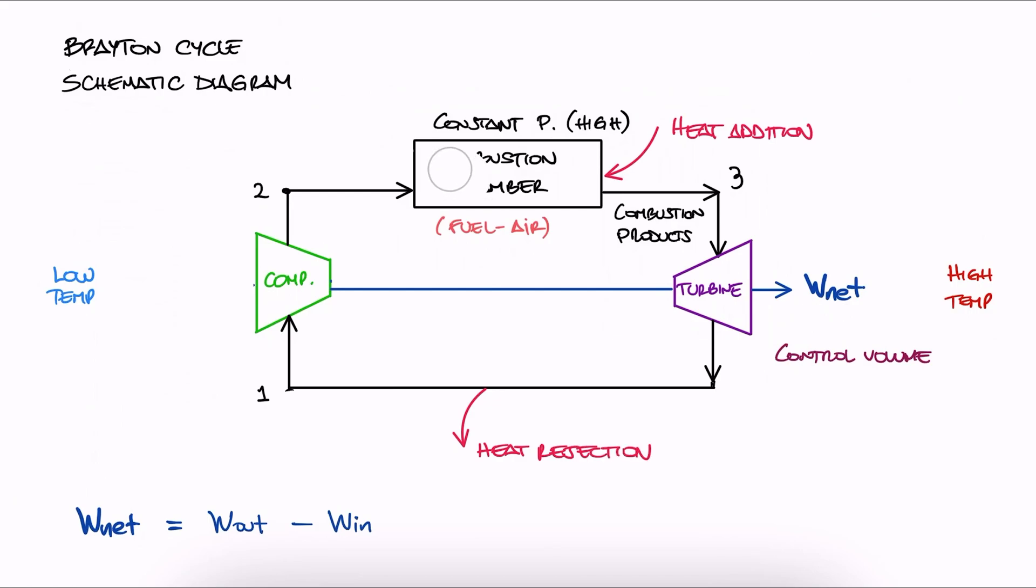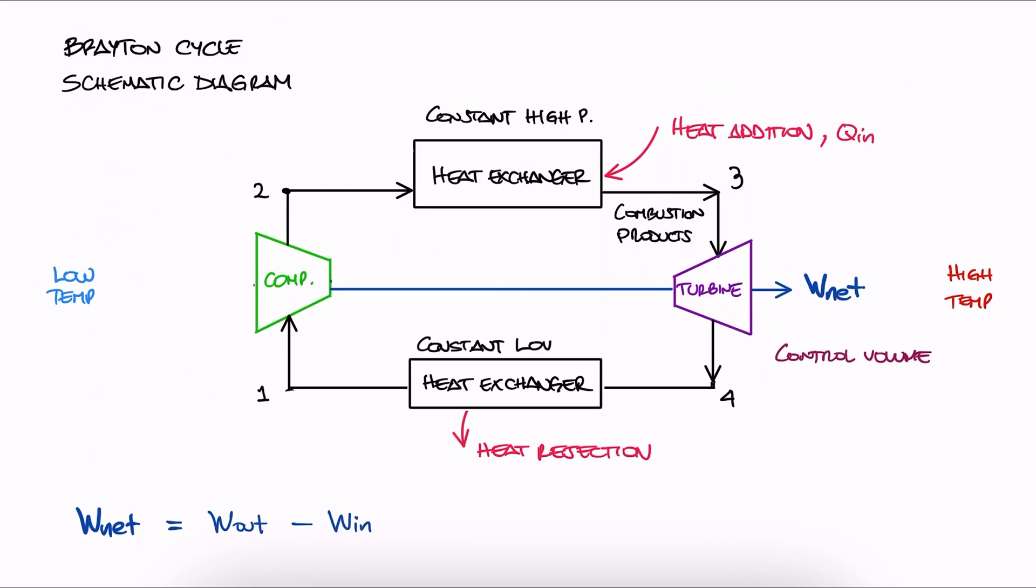In essence, the combustion chamber is replaced by a heat exchanger where heat is being added, obviously from the combustion process itself, still at constant pressure. Then between 4 and 1 we have another heat exchanger where we reject heat also at constant pressure.